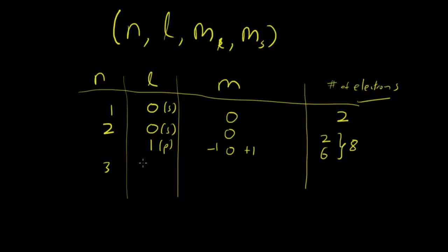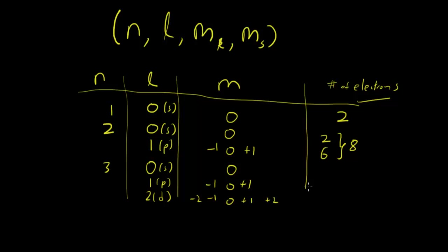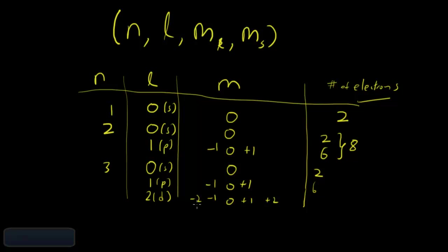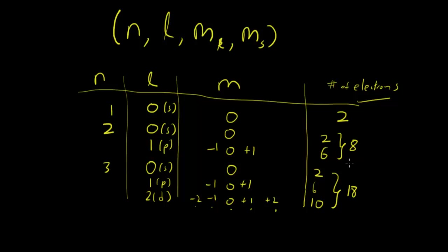For n equals 3, we have L equals 0 (S orbital), L equals 1 (P orbital), and L equals 2 (D orbital). For L equals 0, M sub L is 0, giving two electrons. For L equals 1, M sub L is negative 1, 0, plus 1, giving six electrons. For L equals 2, M sub L is negative 2, negative 1, 0, plus 1, plus 2 — five orbitals times two electrons each is ten electrons. In total we can fit 18 electrons in the n equals 3 level. We can see how the whole system is laid out and how they're all connected.